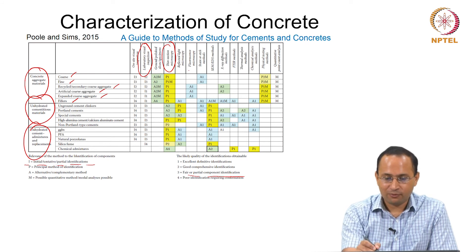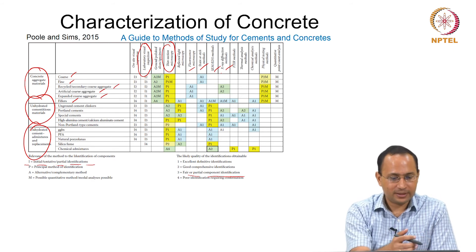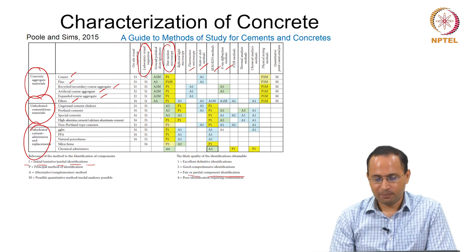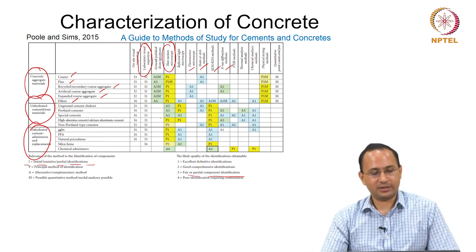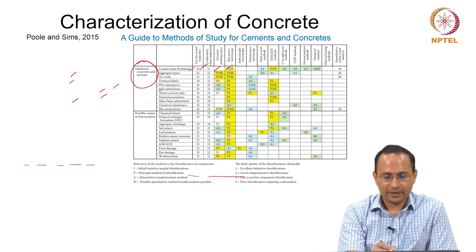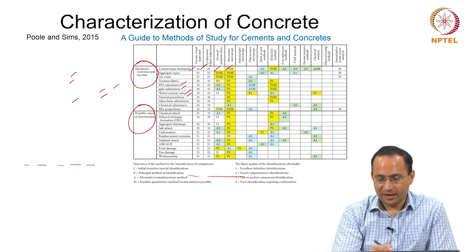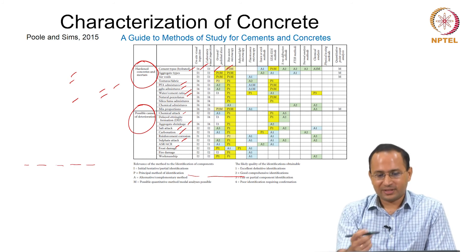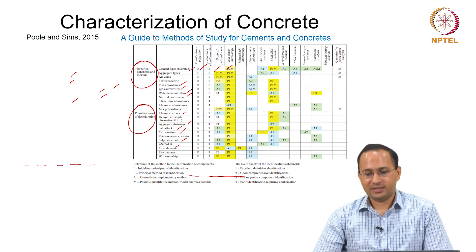Another table looks at hardened concrete and mortar — covering cement types, aggregate types, air void, admixtures, GGBF, water-cement ratio, pozzolans, and also various types of degradation mechanisms such as ASR and sulfate attack. This gives us information about what kinds of techniques we can use to better characterize concrete, and it can serve as a guide to various methods for studying cements and concretes.